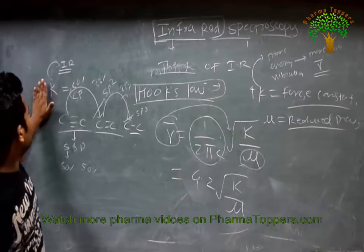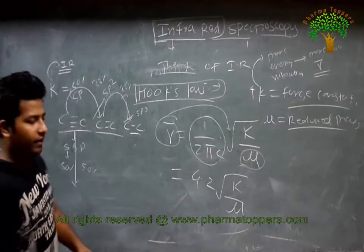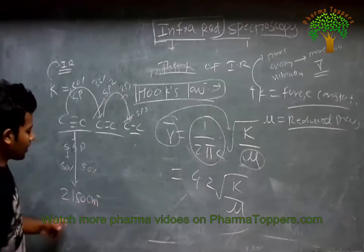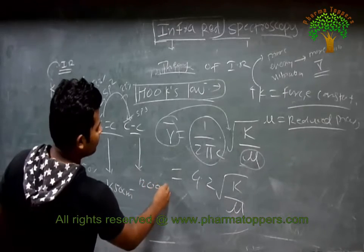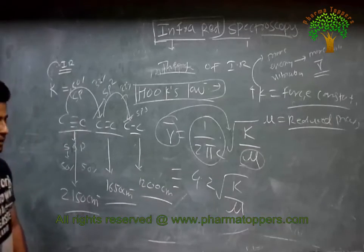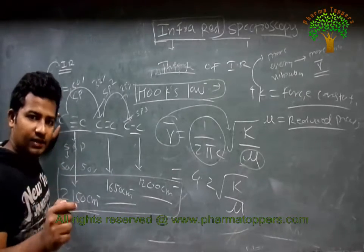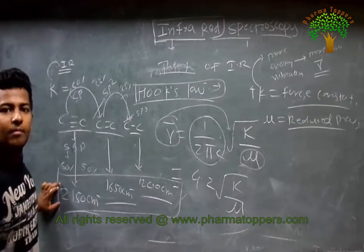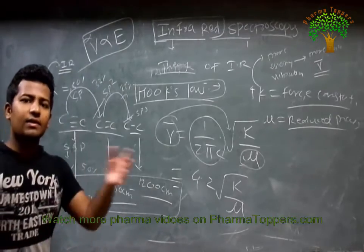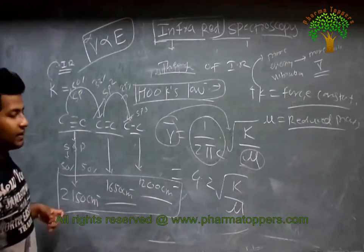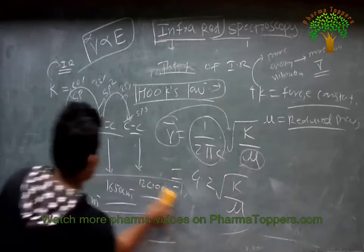That's why C≡C has a higher wavenumber (around 2150 cm⁻¹), C=C has around 1650 cm⁻¹, and C-C single bond is around 1275 cm⁻¹. The stronger the bond, the more energy required for vibration, and therefore the higher the wavenumber. Wavenumber is directly proportional to energy.